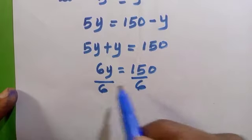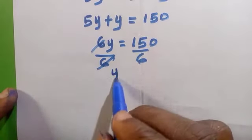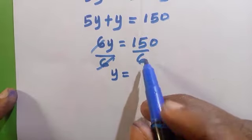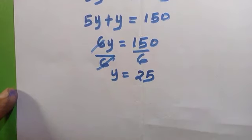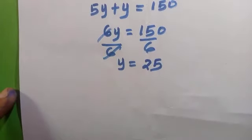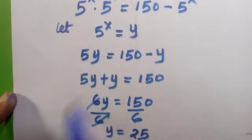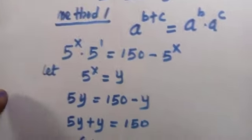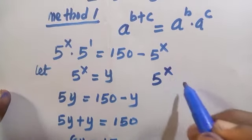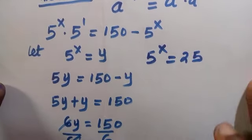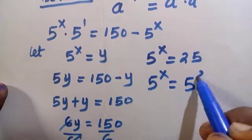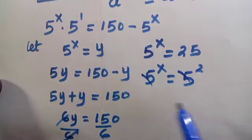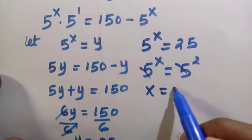Therefore y equals 150 divided by 6, that is going to be 25. On getting this we are now going to recall from where we let 5^x equals y and we replace the value of y there to get the value of x. By doing that we have 5^x equals 25, and we can write 25 in exponent form as 5^x equals 5^2. So canceling 5, then x is 2.